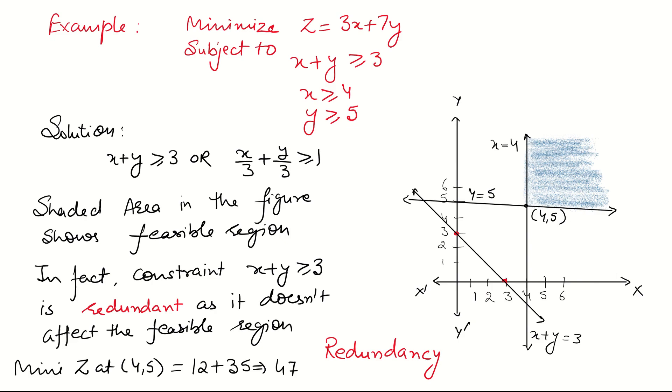Next case: when some constraint becomes redundant. In this example, minimize z which equals 3x plus 7y, subject to x plus y greater than or equal to 3, x greater than or equal to 4, and y greater than or equal to 5.